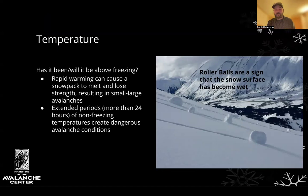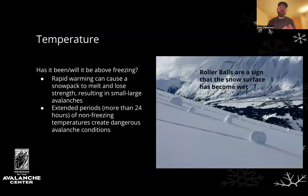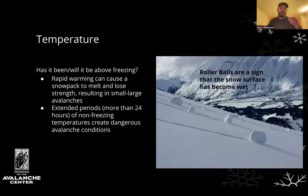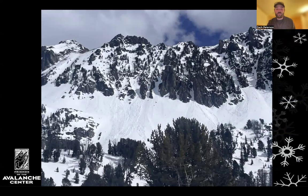The last red flag is above-freezing temperatures. Rapid warming can cause the snowpack to melt and lose strength, resulting in small to large avalanches depending on the duration of warming. These periods are often preceded by indicators like roller balls — if you see roller balls coming off your machine, skis, or board, that's a sign the snow surface has become wet and saturated, and it's time to seek different slopes. Looking at this photo taken in Beehive Basin in the spring, we can see roller balls and small wet-snow avalanches indicating the snow surface has become wet and the snowpack is losing strength.